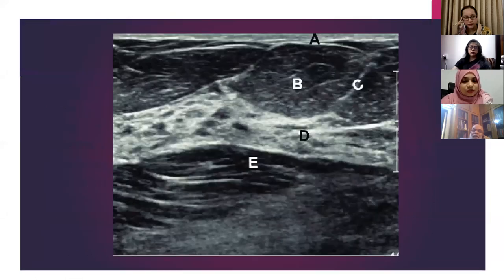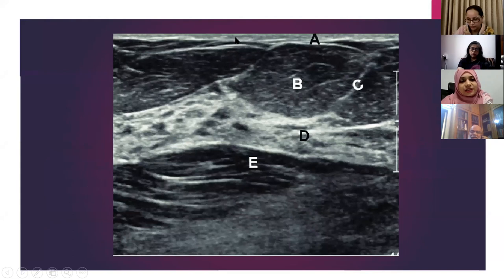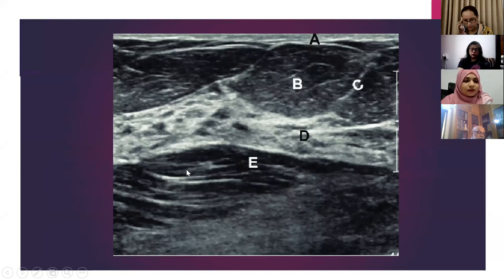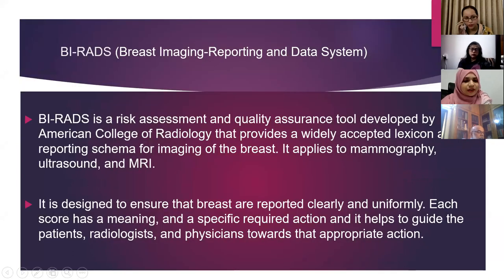Before moving on to pathology, I want to give a quick review of normal breast anatomy on ultrasound. In this ultrasound image, you can see the echogenic line is the skin, the hypoechoic area is the subcutaneous fatty layer, the ligaments running through the subcutaneous fat, the fibroglandular part, and the pectoralis muscle. For evaluation of breast lesions, we should have a clear knowledge about BIRADS — a risk assessment and quality assurance tool developed by the ACR that provides a widely accepted lexicon and reporting scheme for breast imaging. It is applied to mammography, ultrasound, and MRI.